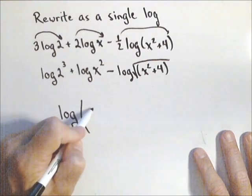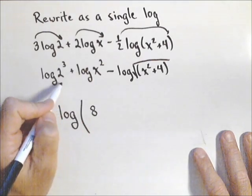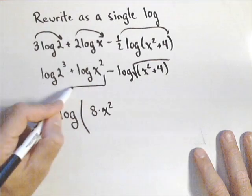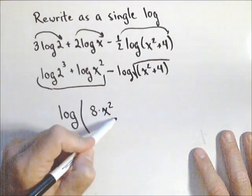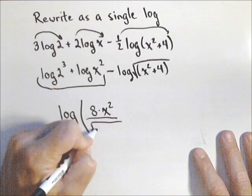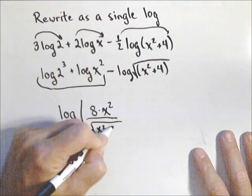2 cubed, we could actually write that out as 8, so that's our 2 cubed times x squared. That's using the product on these. And because this one is subtracted, it goes in the denominator, so square root of x squared plus 4.